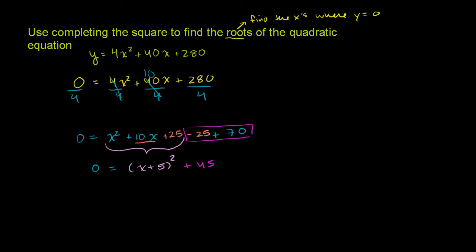So to solve for x, let's just subtract 45 from both sides of this equation, let's subtract 45. And so the left-hand side of this equation becomes negative 45. And the right-hand side will be just the x plus 5 squared. These guys right here cancel out.